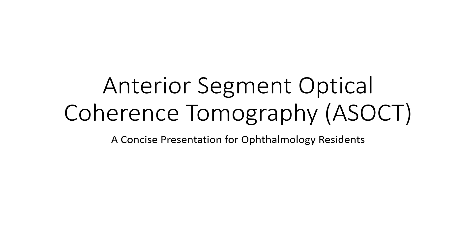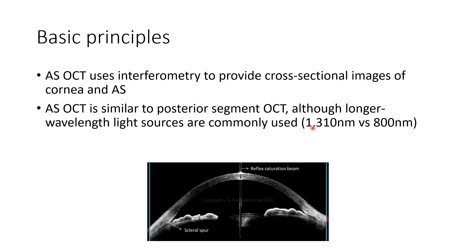This video discusses anterior segment optical coherence tomography, that is ASOCT. ASOCT uses interferometry to provide cross-sectional images of the cornea and anterior segment. It is similar to posterior segment OCT, although longer wavelength light sources are commonly used. In ASOCT, a wavelength of 1310 nanometers is used, whereas for posterior segment OCT, a wavelength of 800 nanometers is used.